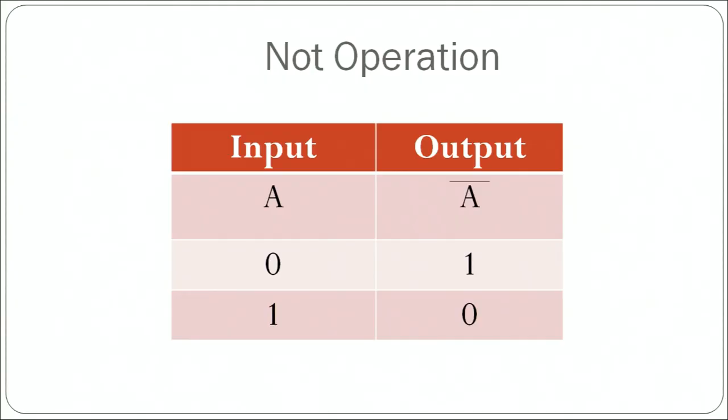The next is the NOT gate. The NOT operation is simple. If the input is 0, the output is NOT 0 — which is 1, because there are only two digits in the binary number system. If the input is 1, the output would be NOT 1 — which is 0. NOT is simply the complement of the input. If it is 0 it becomes 1, if it is 1 it becomes 0.